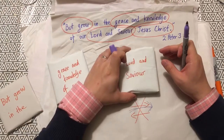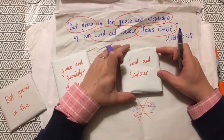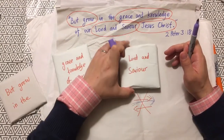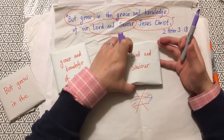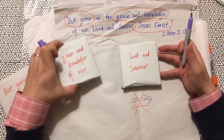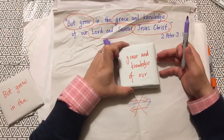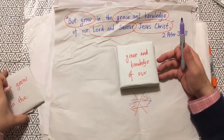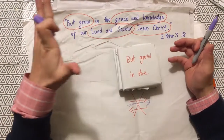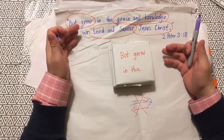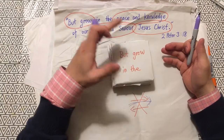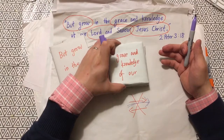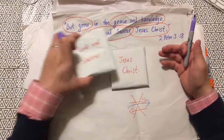We solidify the last part, and then build on what comes before. Because of this ordering, naturally we have 'Lord and Savior, Jesus Christ.' Once that's solidified, we build on the next part: 'Grace and knowledge of our Lord and Savior, Jesus Christ.' And now to top it all off, we begin with the first part: 'But grow in the grace and knowledge of our Lord and Savior, Jesus Christ.'